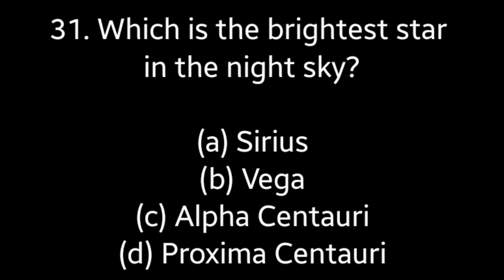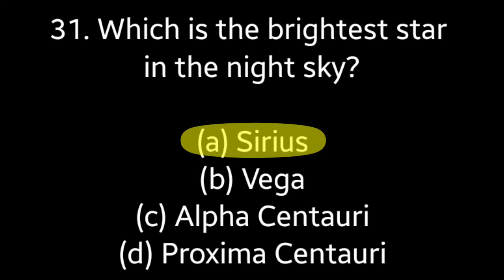Question number 31: Which is the brightest star in the night sky? Options: Sirius, Vega, Alpha Centauri, Proxima Centauri. Answer is option A — Sirius.